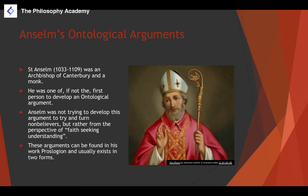These arguments can be found in a hefty text called the Proslogion, and they exist in two forms. We're going to analyze both forms separately, because most of the time people only focus on the first variation of Anselm's ontological argument and not the second.